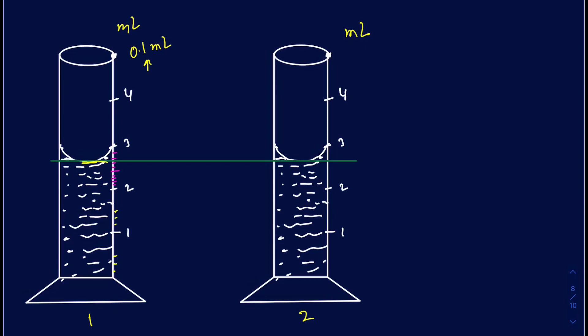When you pour liquid into a graduated cylinder, you always read the lower meniscus. Reading the lower meniscus on the first cylinder, it's obviously going to be 2 milliliters for the whole number. Counting the small markings: that's six, seven — so the line is actually between seven and eight. Everyone agrees it's going to be 2.7 milliliters. It seems like it's in between seven and eight, and that's where your estimation comes in.